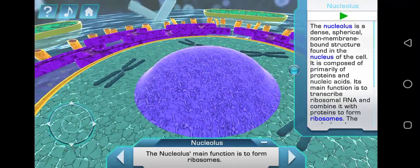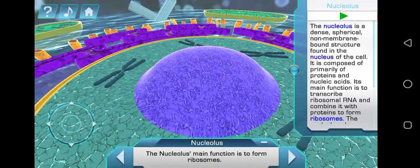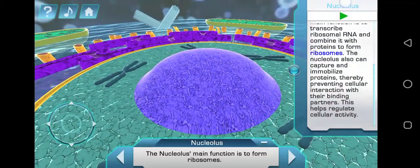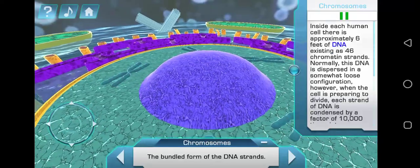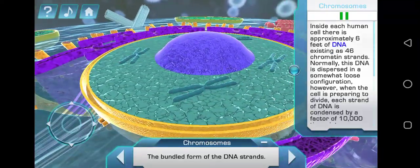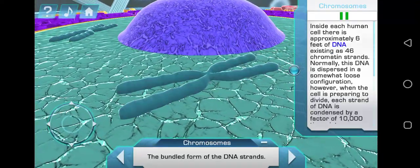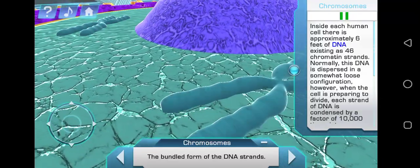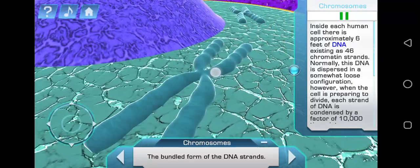Inside each human cell there is approximately six feet of DNA existing as 46 chromatin strands. Normally this DNA is dispersed in a somewhat loose configuration.